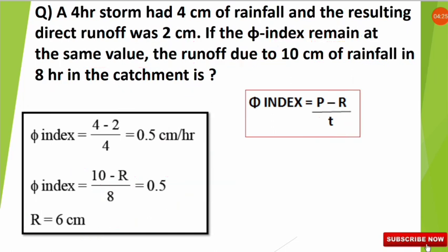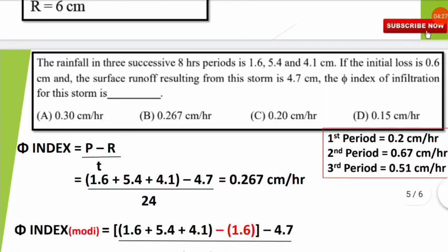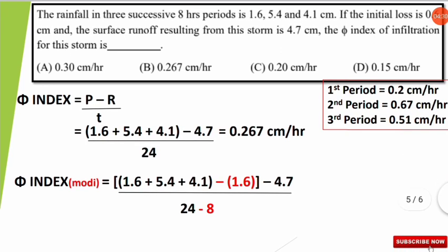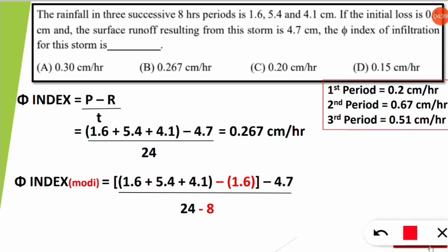Different kinds of problems are also asked from hydrology. Now we will see another type of question directly taken from the GATE sample paper. We will solve it very easily with the same formula. The question is: the rainfall in 3 successive 8-hour periods is 1.6, 5.4, and 4.1 cm.